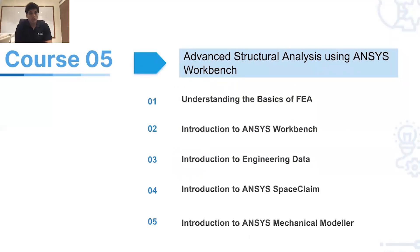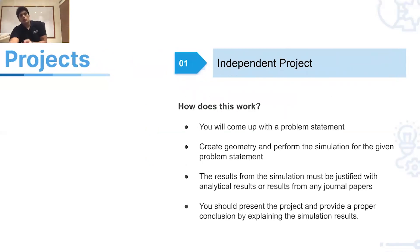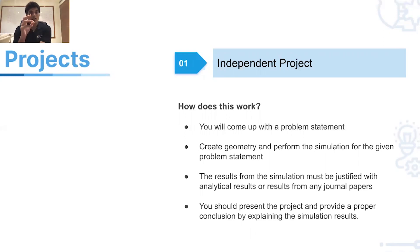Course 5 is advanced structural analysis using ANSYS Workbench. You learn FEA basics, introduction to ANSYS Workbench, engineering data, SpaceClaim, and the Mechanical module. You then perform static, transient, and explicit dynamic analysis. There are independent projects where you define a problem statement, create geometry, and run the simulation. There are also around eight to nine industry-oriented assignments. The course gives you an intermediate level of understanding for structural simulation.